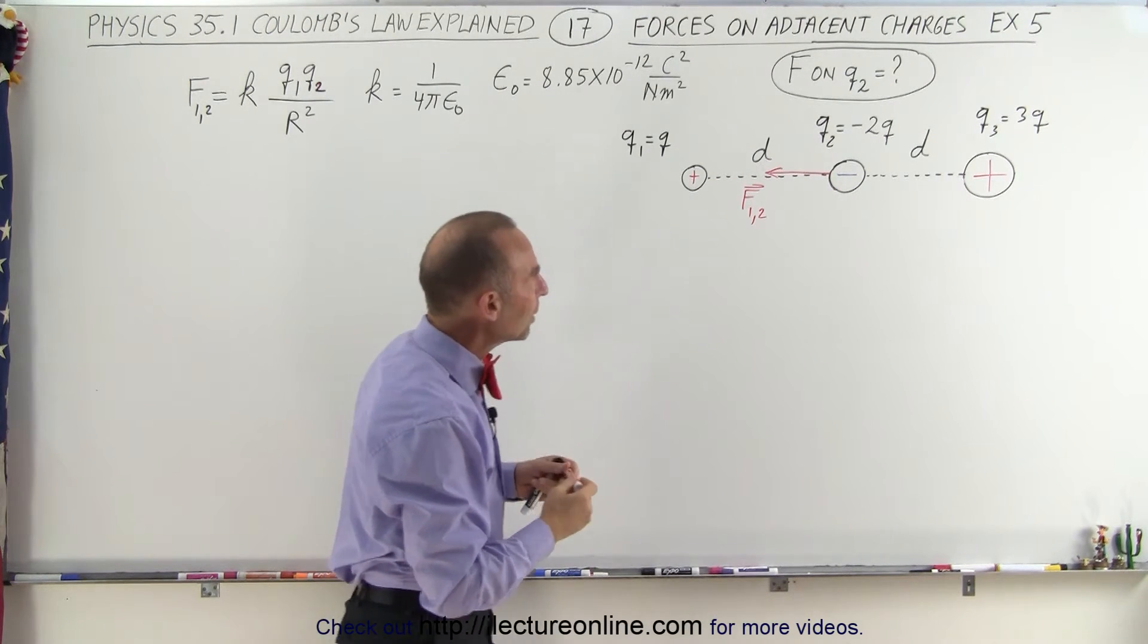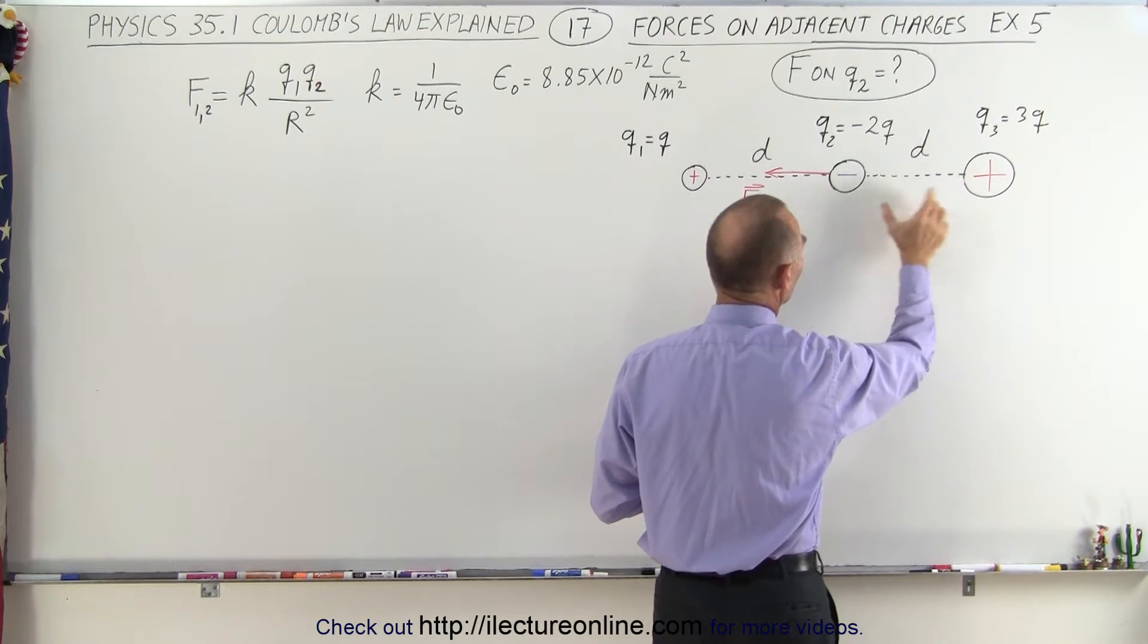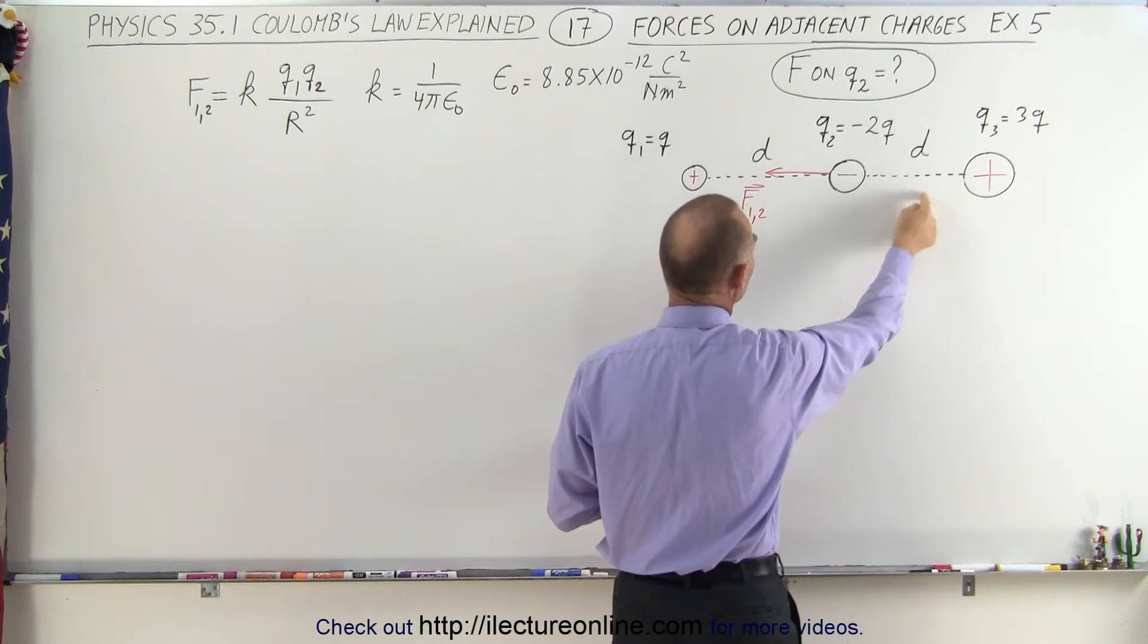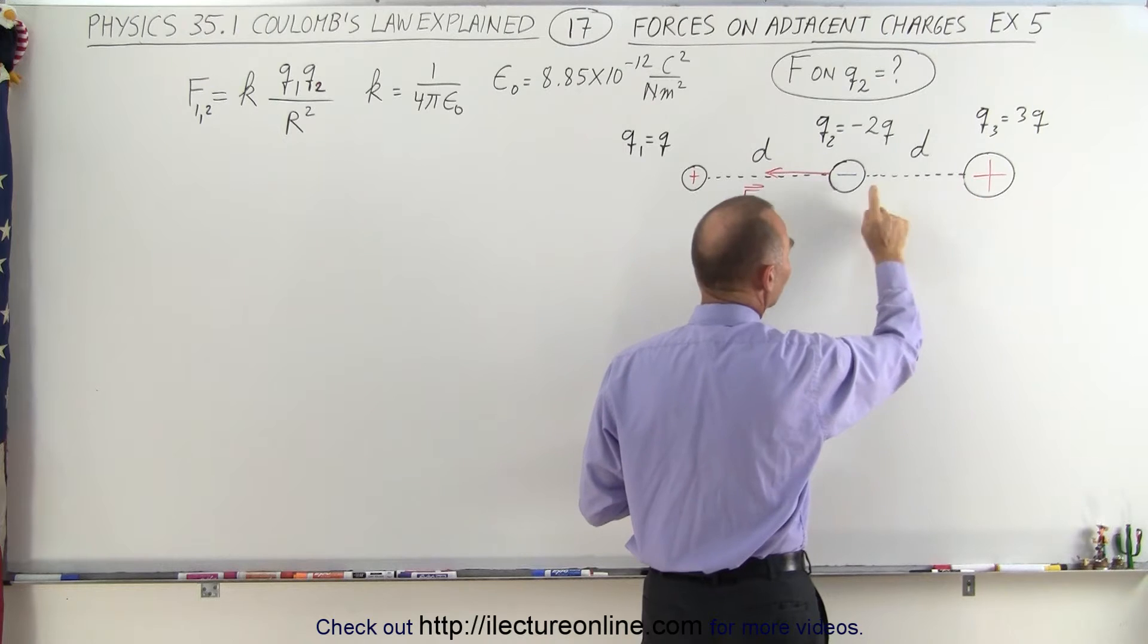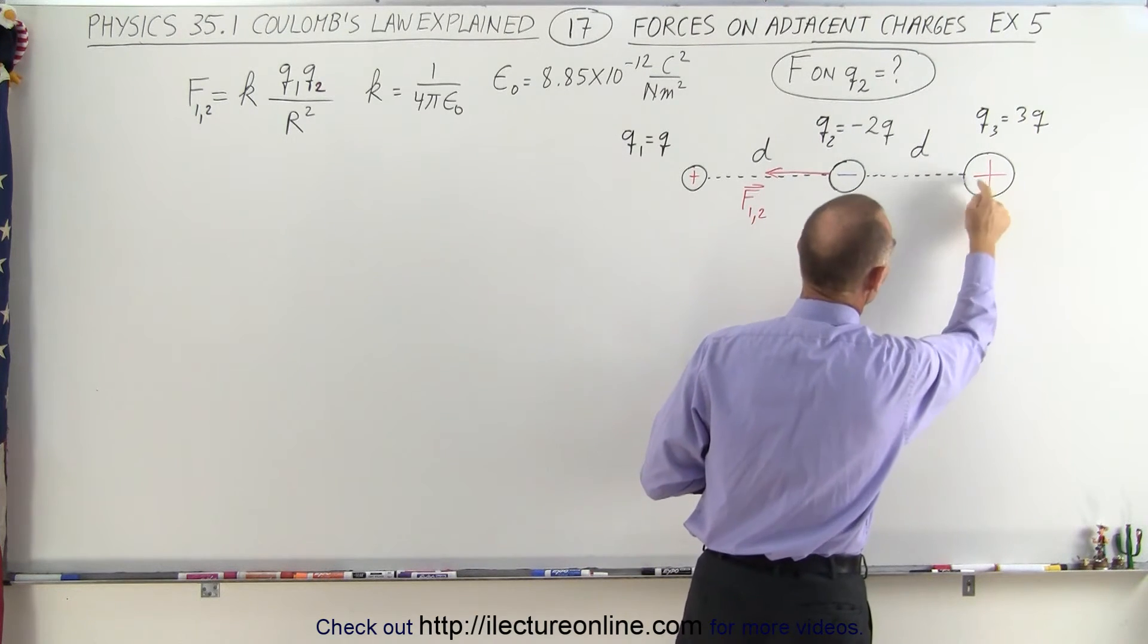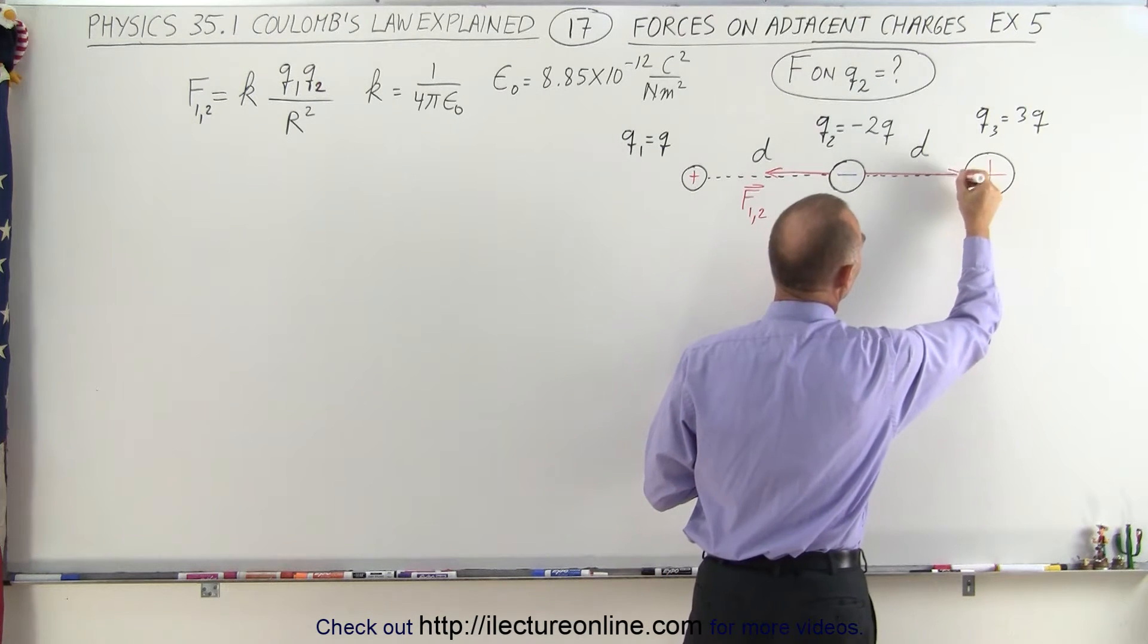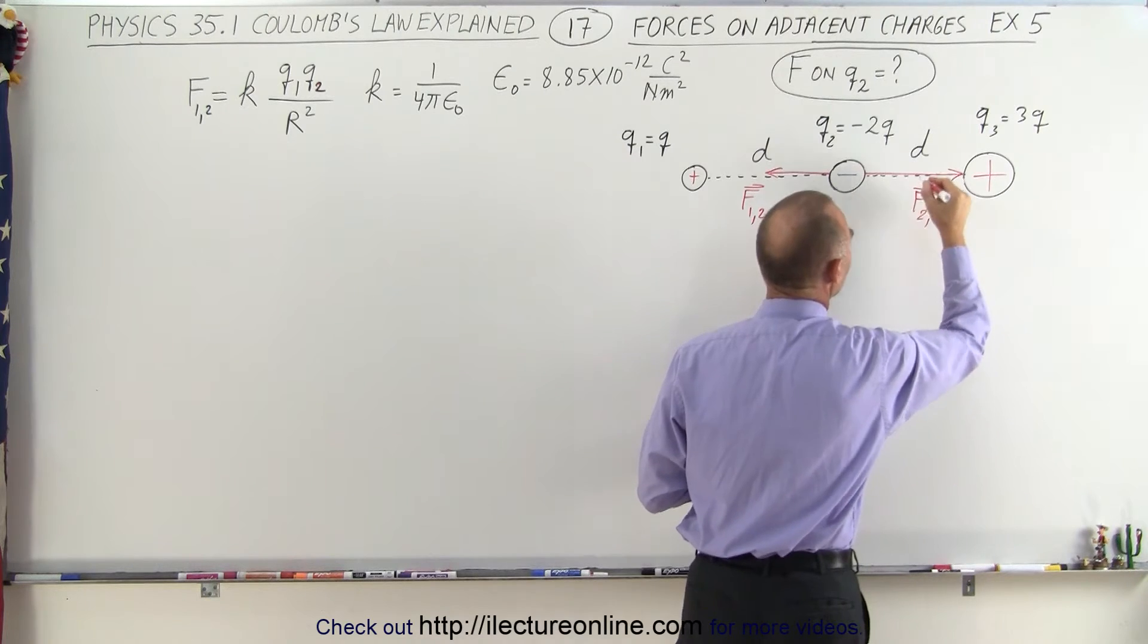Now, the force between Q2 and Q3 will be a stronger force because the charge Q3 is larger than Q1, and they're equal distance away from one another. It'll be to the right because Q3 will be pulling on Q2 to the right, so we'll see a force in this direction. This would be F between 2 and 3.